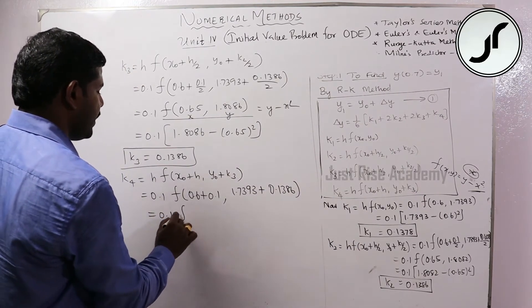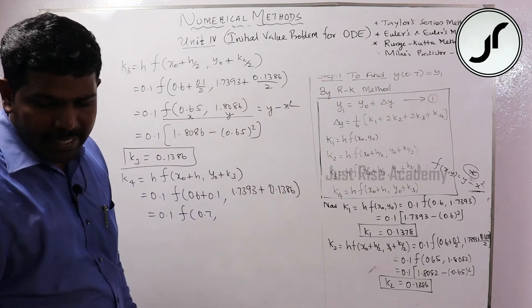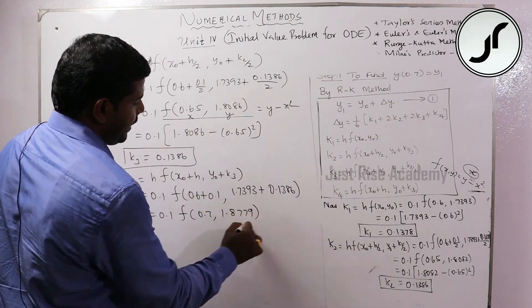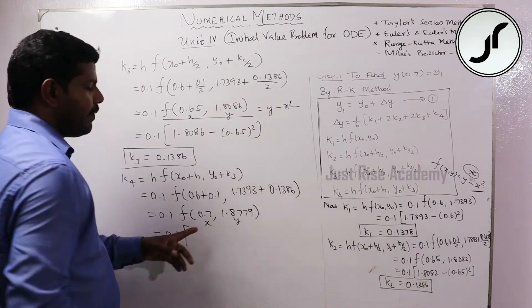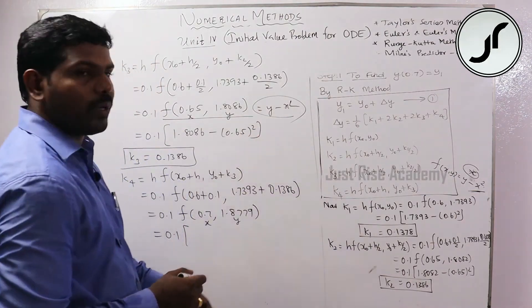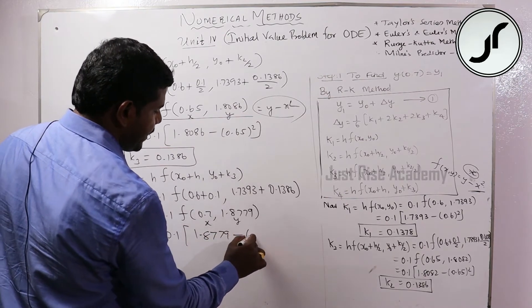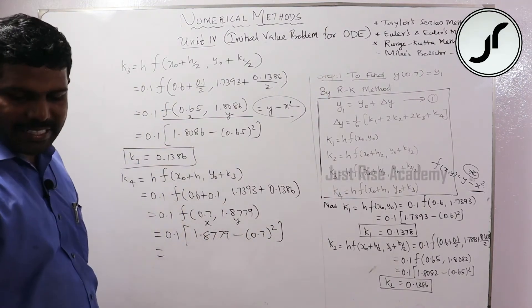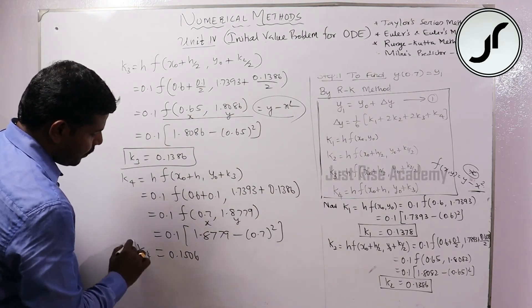So 0.1 into f(0.7, ...), adding gives 1.8779. Then f(x, y) equals y minus x squared: 1.8779 minus 0.7 squared. Using calculator we get k4 equals 0.1506.